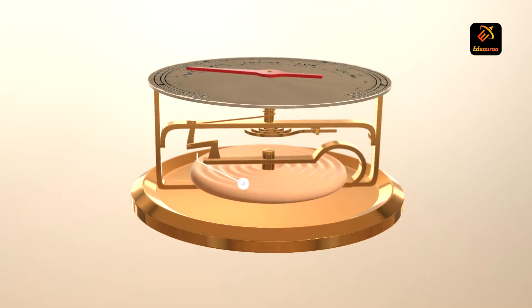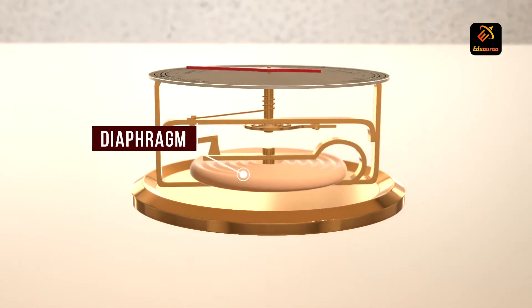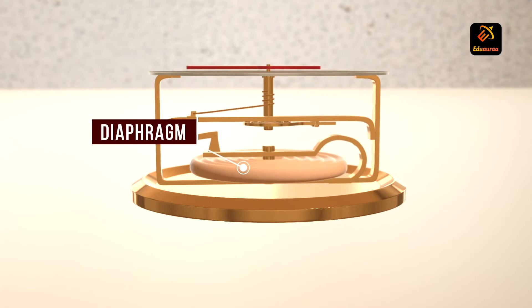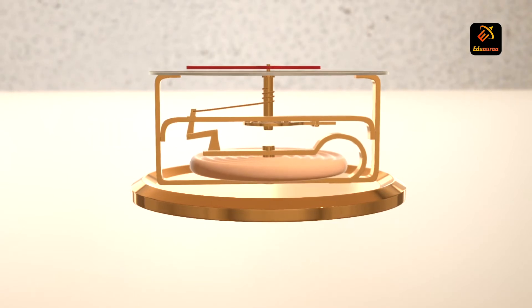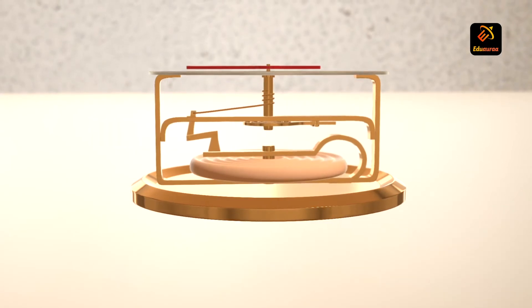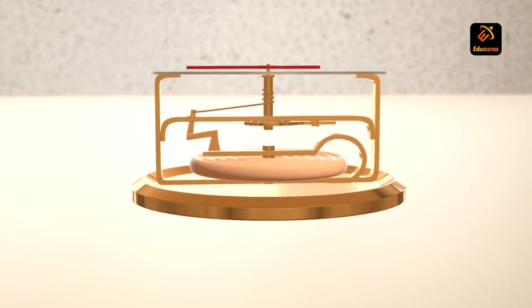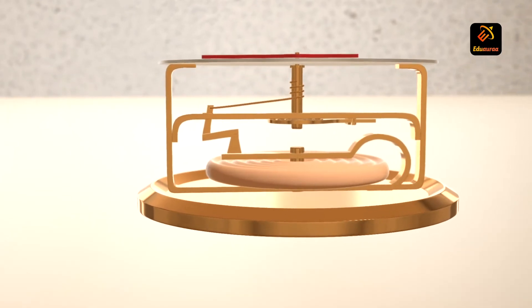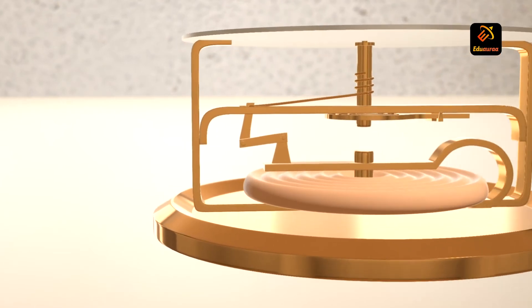This metallic sheet acts as a diaphragm. The diaphragm is just like our chest. When we breathe in, it comes out, and when we breathe out, the diaphragm goes back in. The same action is replicated by this diaphragm in the aneroid barometer.